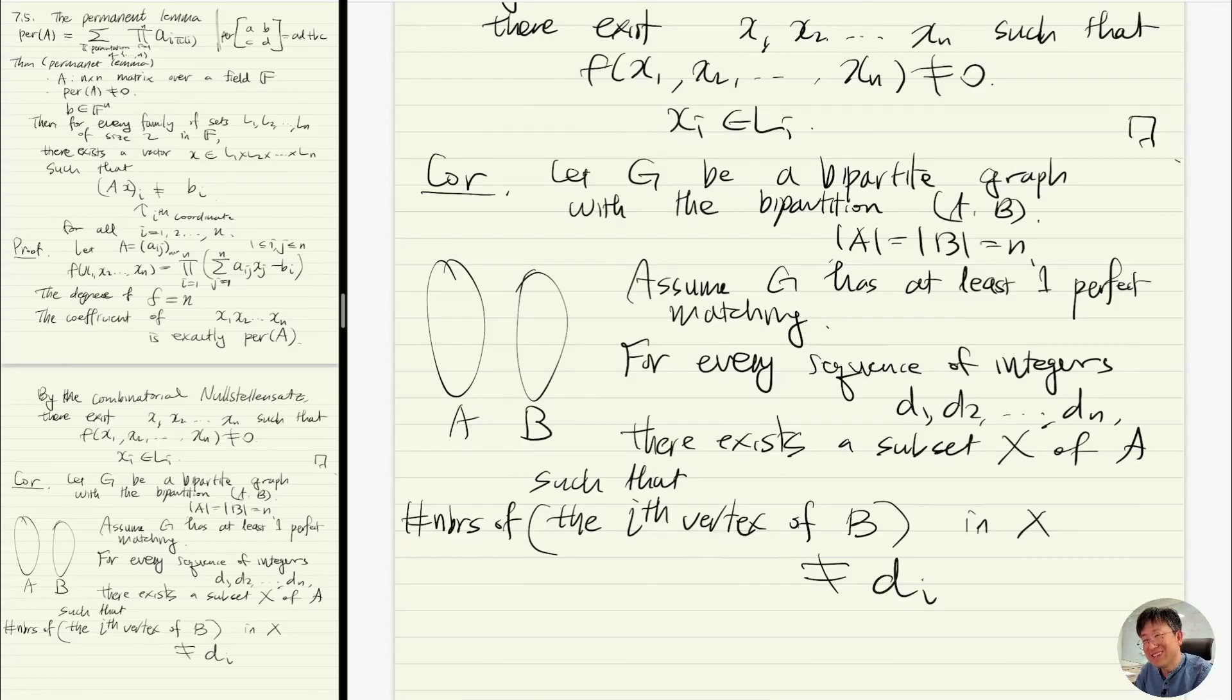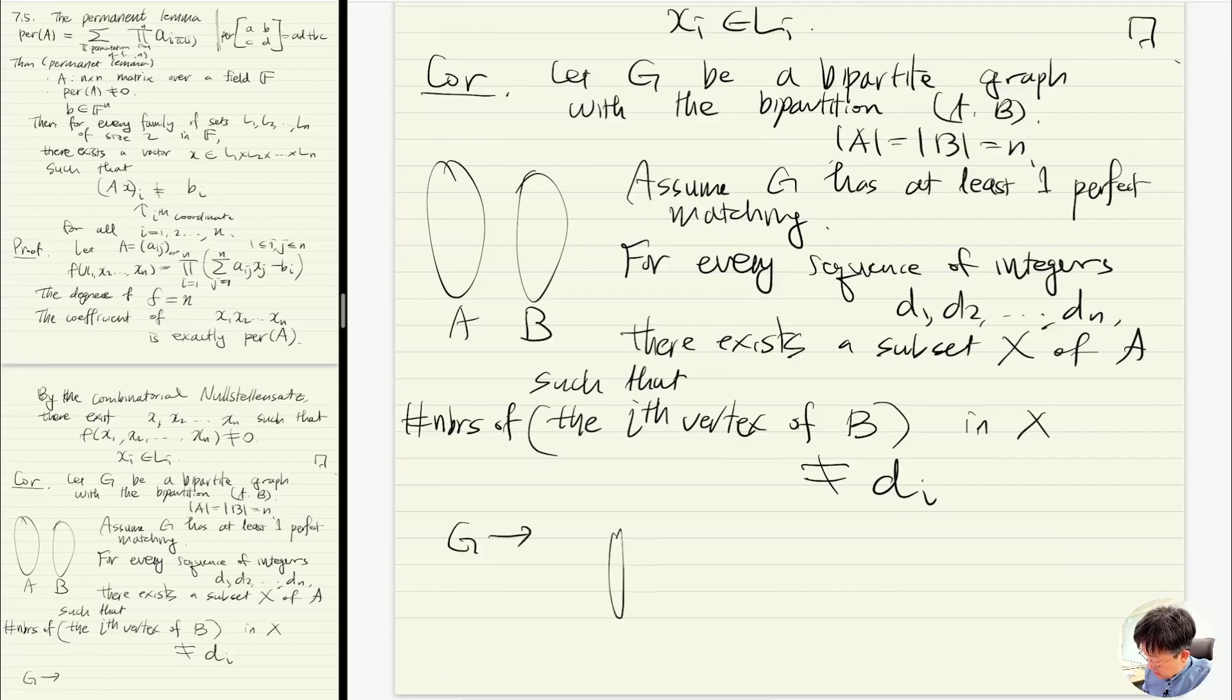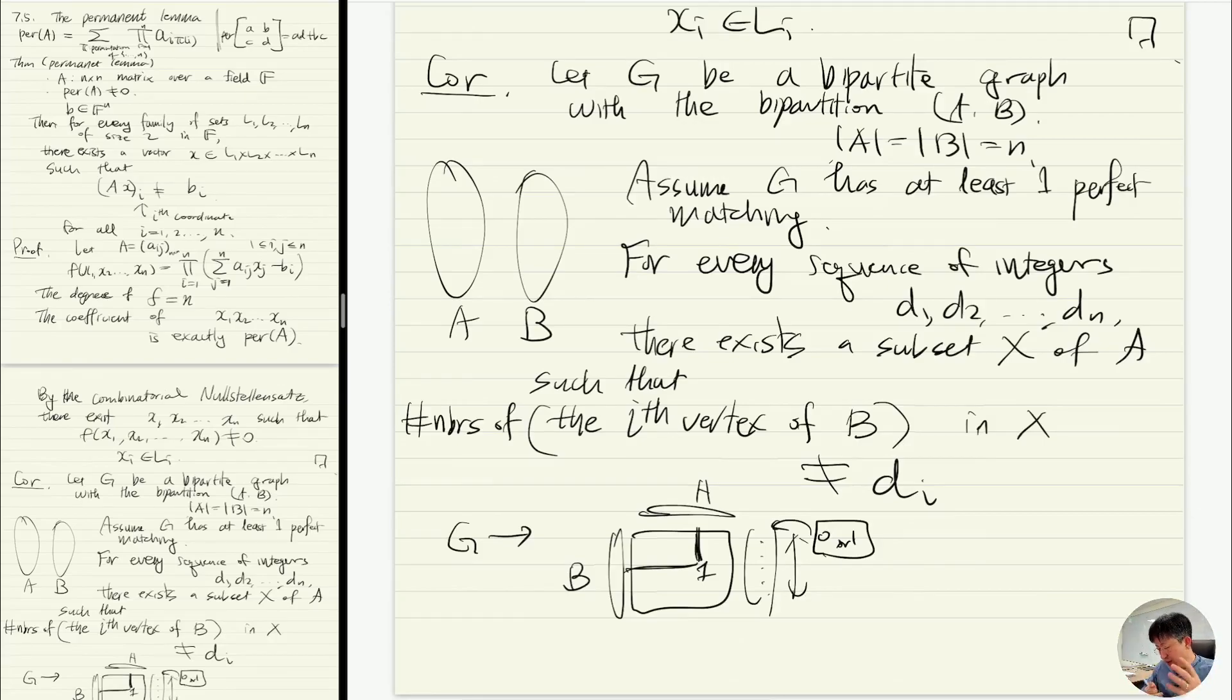And the proof is easy. This is almost like a reformulation, because when you have a graph G, I can construct the matrix. Here you have A, here you have B, then you put 1 if these two are adjacent, otherwise you put 0. Since the graph has a perfect matching, the permanent is non-zero. Now if you use the permanent lemma, that means I can multiply some vector here so that it can avoid being equal to d_i, and I will only multiply 0 or 1. Once I multiply that, then the outcome is the degree, the number of neighbors in that set from the B side, and that's not equal to d_i. So that's precisely the permanent lemma.